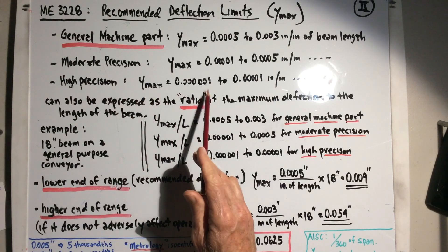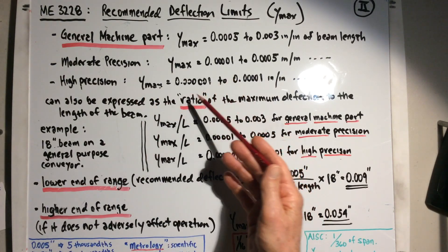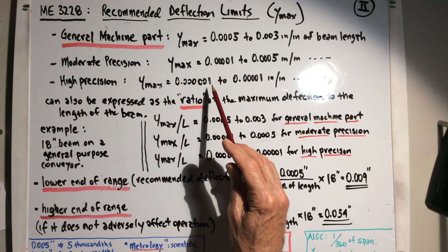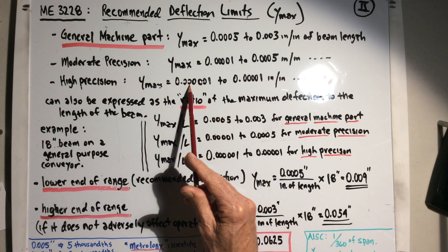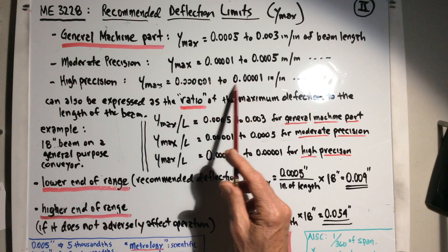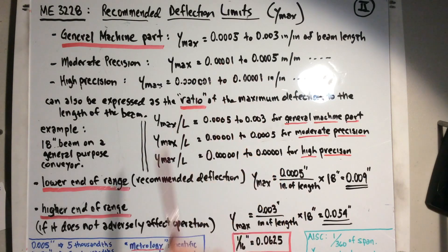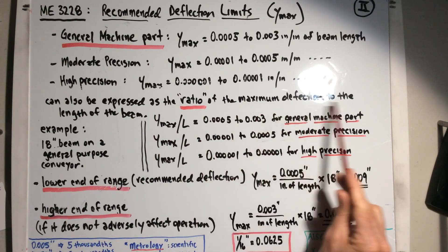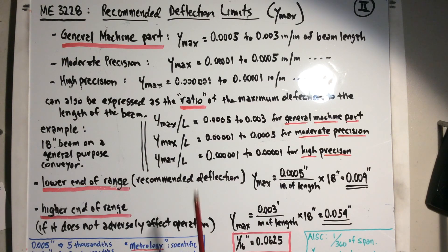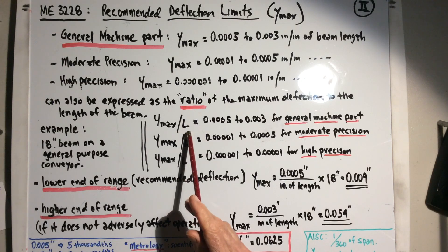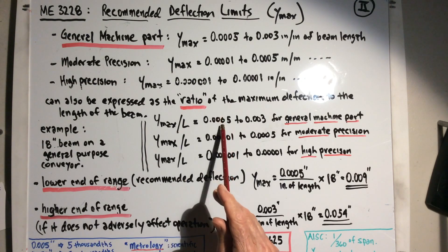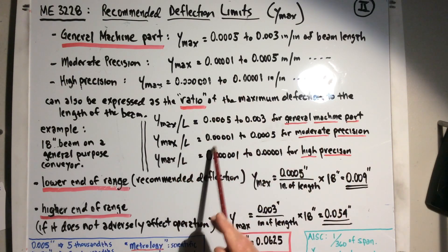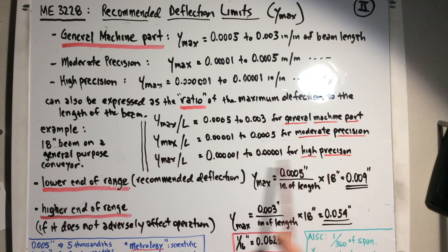For high precision — such as most measuring tools or instruments — the limit is 0.00001 to 0.00001 inches per inch of beam length. These recommendations can also be expressed as a ratio of maximum deflection to the length of the beam. So y-max divided by length equals these same values — five ten-thousandths to three thousandths for general machine parts, and similarly for moderate and high precision. It's just the ratio between maximum deflection and length.